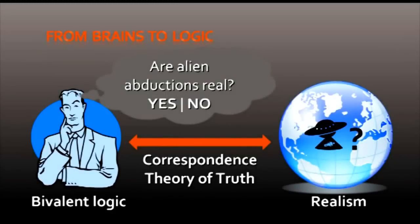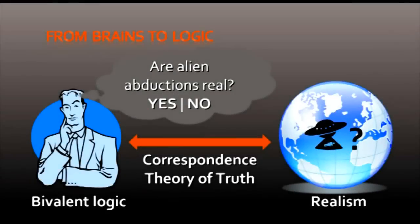Our logic is bivalent. When we ask tough questions about reality, like, are alien abductions real? We expect that this question will have an answer of the form yes or no, true or false. Even if we do not know what the correct answer is, that's how our logic operates. And the reason we think like this is that most of us make the assumption of realism. It is a good assumption. We assume that there is an objective world out there, independent of our minds.